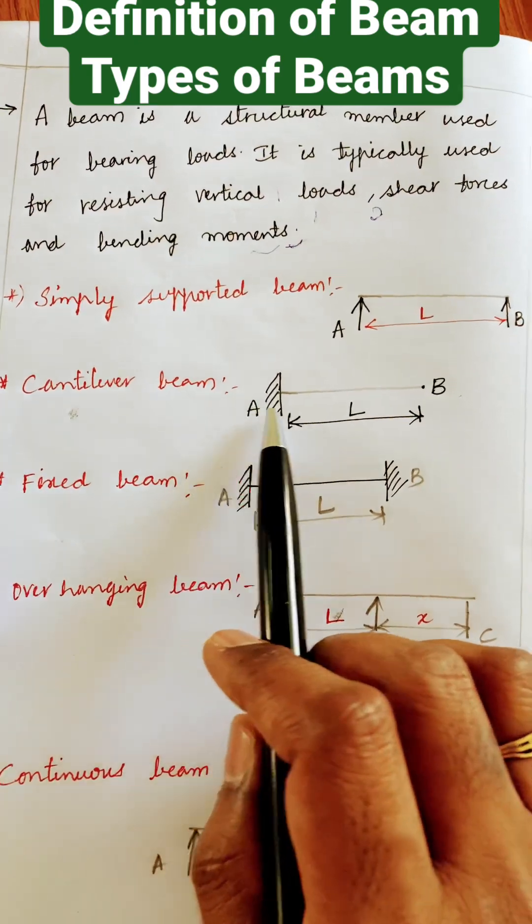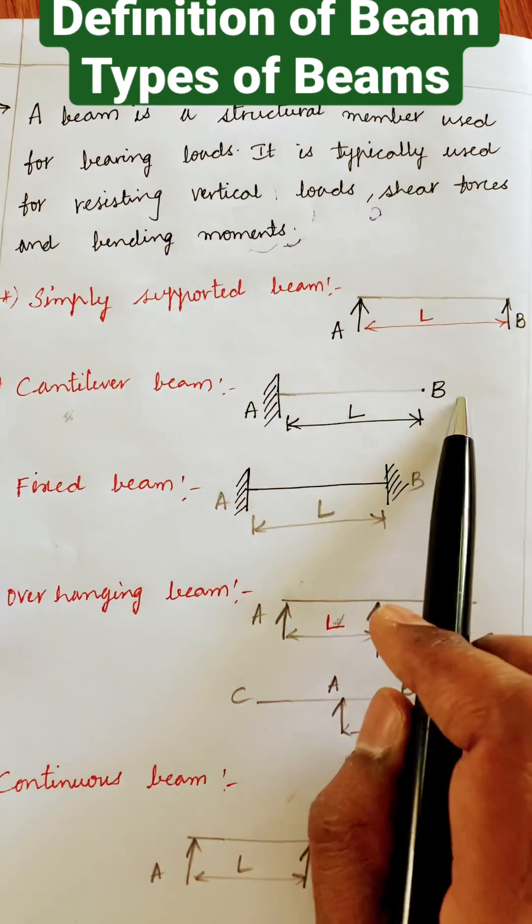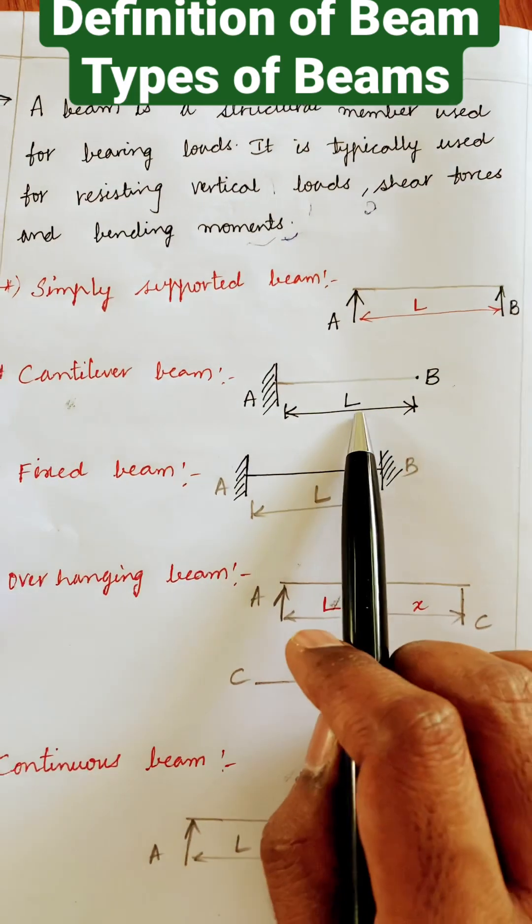Cantilever beam. It is a beam supported at one end and the other end is to be free with length L.